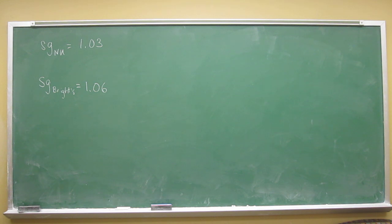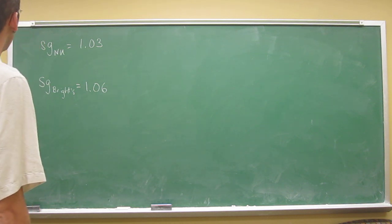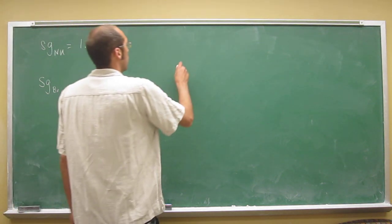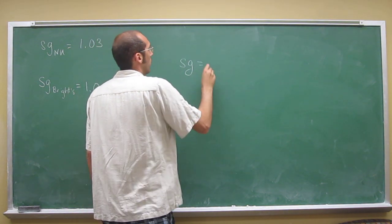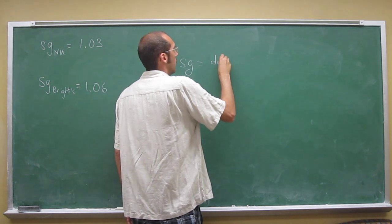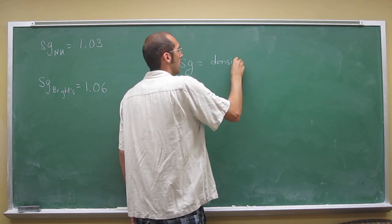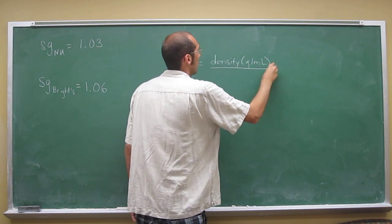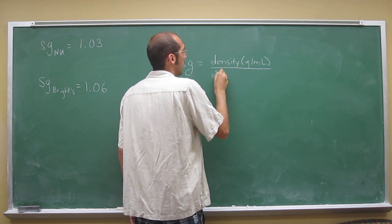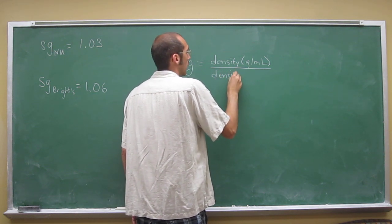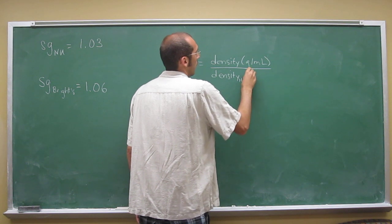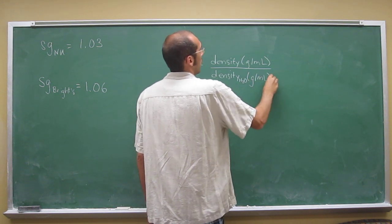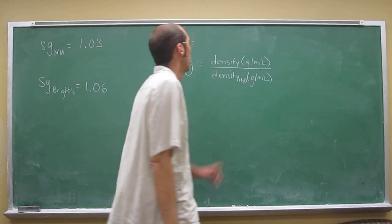Remember, the formula for specific gravity is the density of whatever you're measuring in grams per mil over the density of water at 4 degrees Celsius in grams per mil.